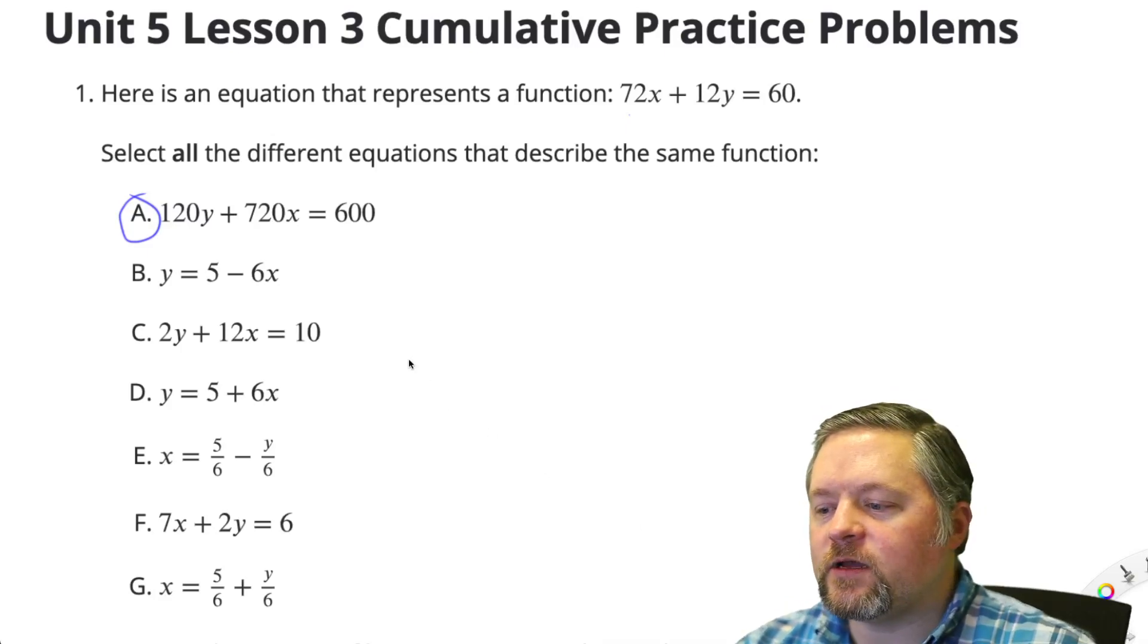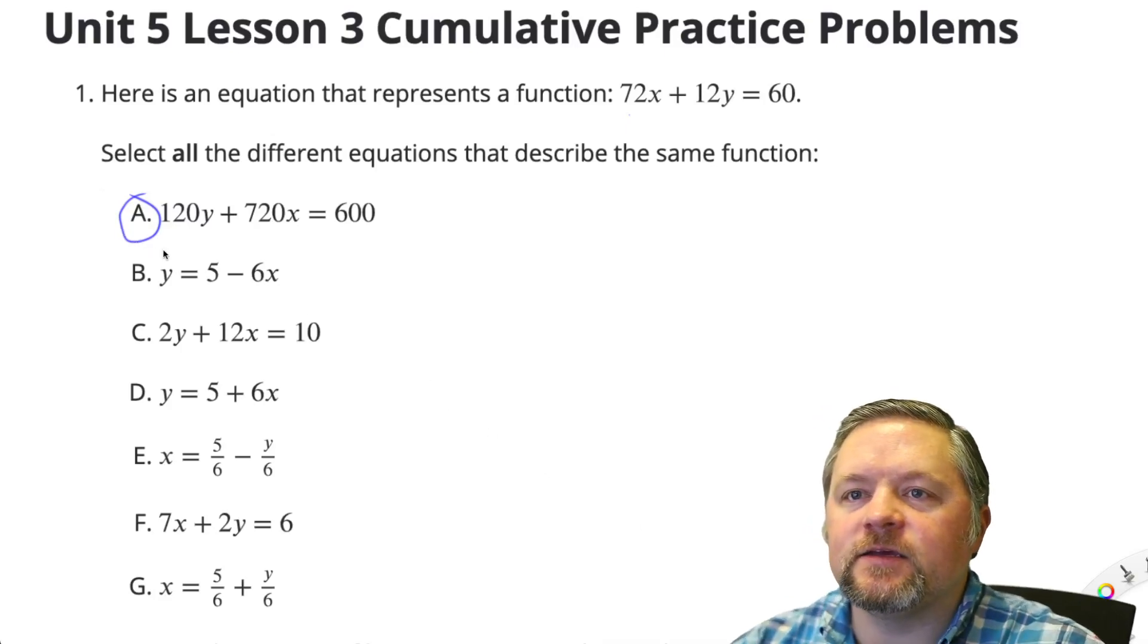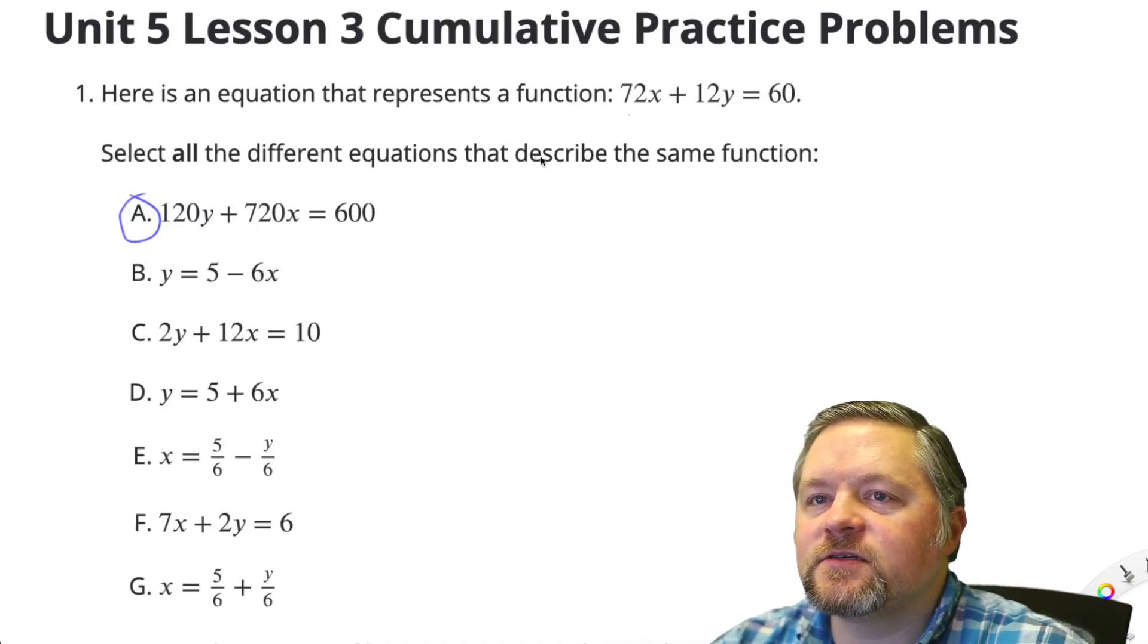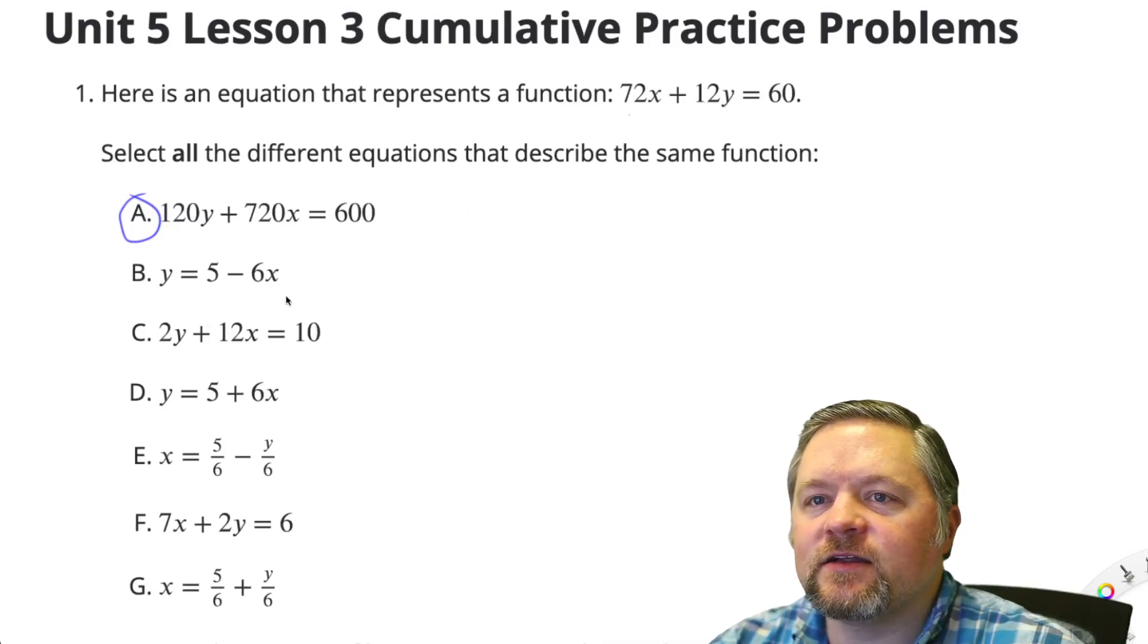Now, what else will work? B is y equals 5 minus 6x. That's not set up the same, so we can't really get through that nearly as well.